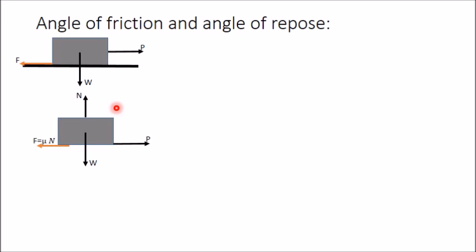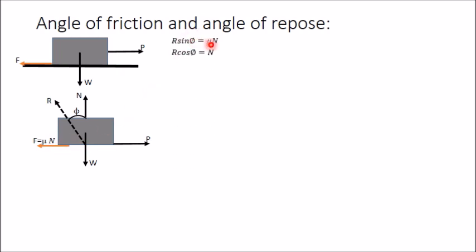In many situations it is better to replace this normal reaction and friction force by a single force R which makes an angle φ from the normal reaction. So R is the resultant of normal reaction and friction force. The component of R along the horizontal direction will be μN and the component of R along the vertical direction will be N. So the vertical component is R cos φ and the horizontal component is R sin φ.